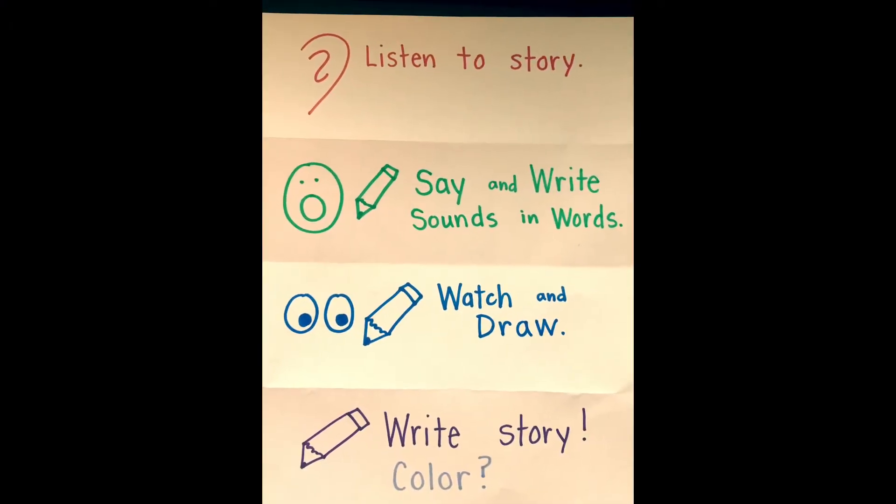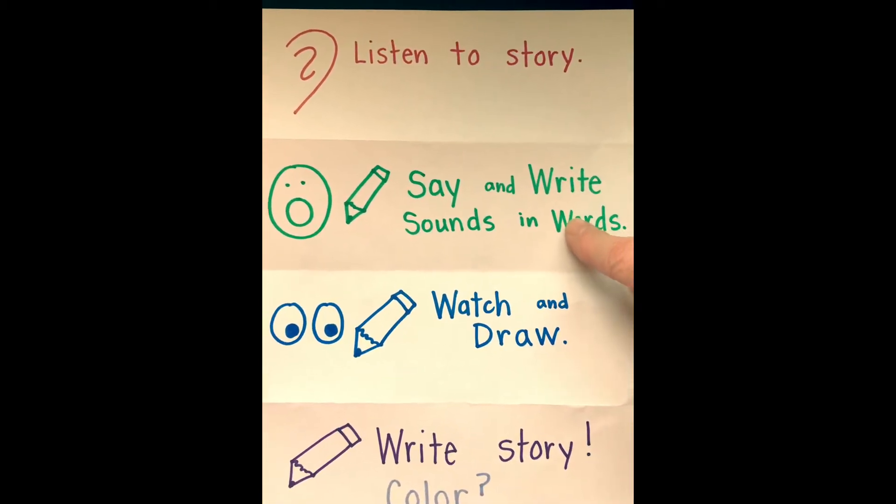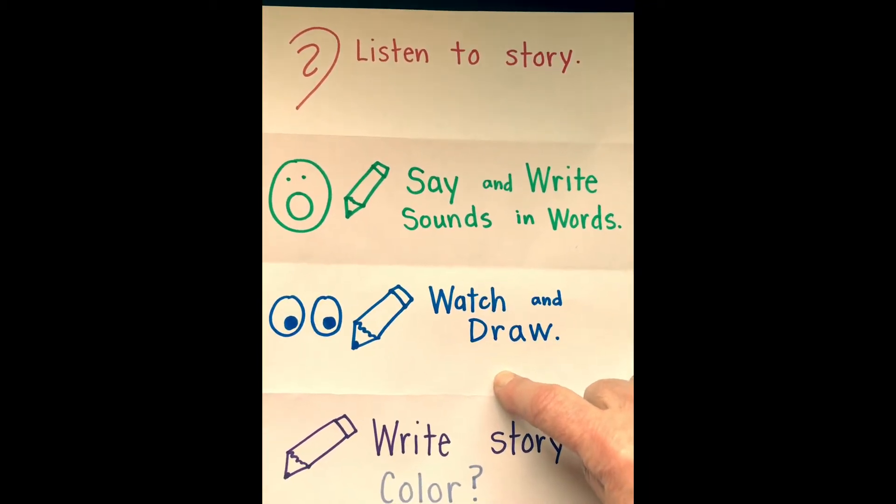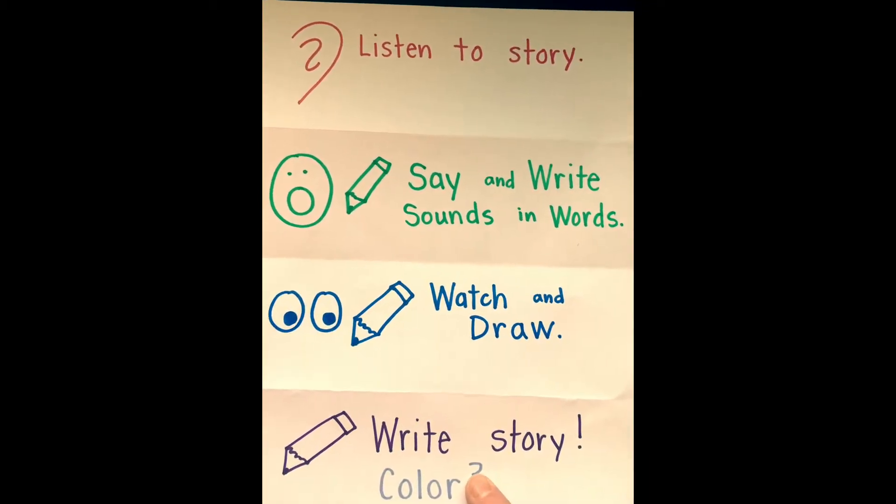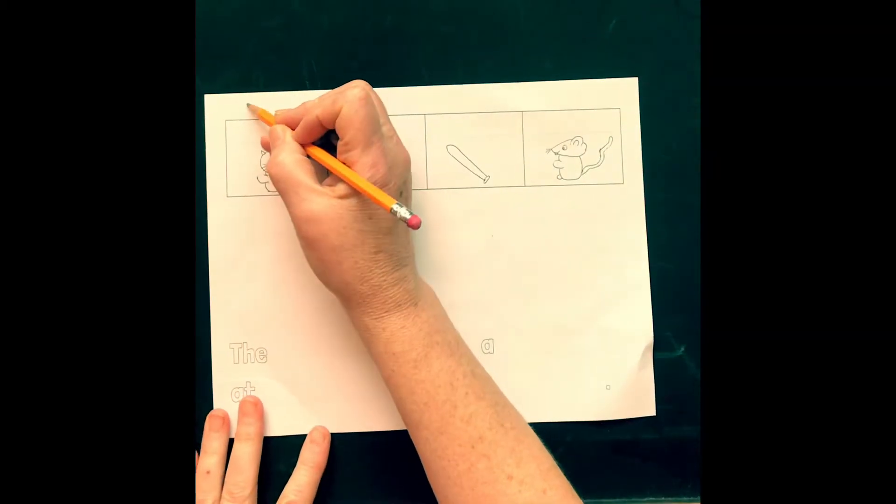And the four steps: first you're going to listen to the story, then you're going to say and write the sounds and words with me, and then you're going to watch and draw the pictures with me, then we'll write the words for the story, and then you can color it on your own. So start with your name at the top.